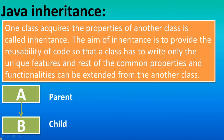One class acquires the property of another class — class B takes the property from A. The important thing here is it supports code reusability, because whatever code you write in A, you can use in B also. This saves time because you don't need to write code again and again.